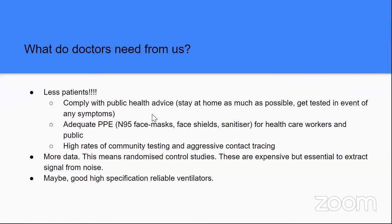Robert asked me to address what doctors need from us. Primarily, we need fewer patients — that is the critical thing. There are whole aspects to achieving that: hand-washing, social distancing, face masks, all the things public health people are telling us. We also need a lot more data — randomized controlled trials of the various therapies available. It's extraordinarily difficult to filter out gut instincts and identify which ones are actually true versus biased by our own experience.